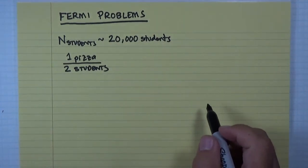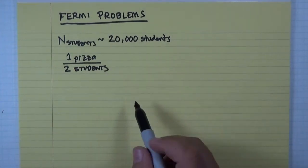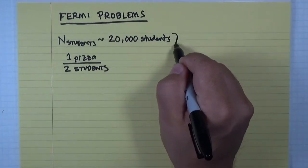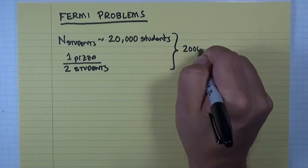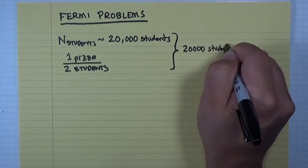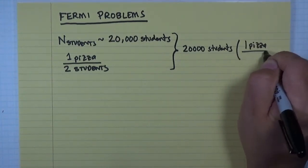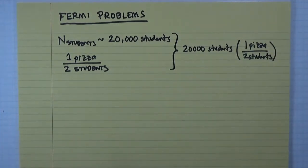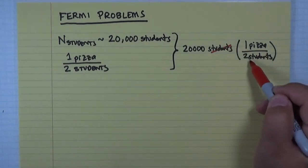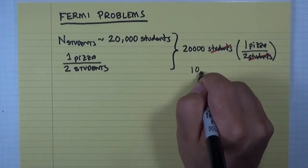So if I were to feed all the students on campus pizza one time, I would multiply those two numbers together to figure out how many pizzas that would be. So that would be 20,000 students. I would multiply that by one pizza for every two students. So to feed all the students pizza once, you'll see students as a unit cancel out here leaving me with pizzas. I would need 10,000 pizzas.